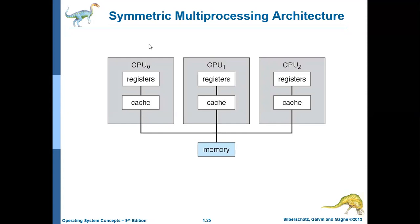This diagram explains the symmetric multiprocessing architecture. Here you can see there are three CPUs — CPU zero, CPU one, and CPU two. This entire block is a CPU and each CPU has its own registers and cache memory. And there is a main memory RAM which is shared by all these processors. This is one example of symmetric multiprocessing architecture.